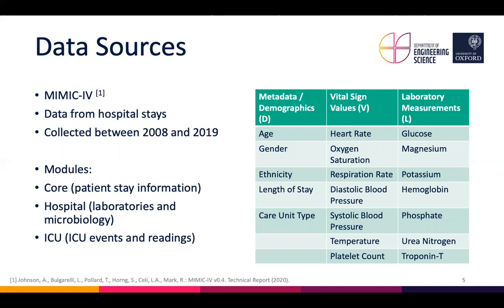The second database we're using is MIMIC-4, which contains data from hospital stays from the same medical center as MIMIC-CXR. Because MIMIC-CXR and MIMIC-4 share a common cohort of patients, and they use the same patient IDs across the two databases as well as consistent dates and times, we can use them together in this multi-modality study. Modules of MIMIC-4 that we were interested in were the core modules with information about patient stays, the hospital module which has laboratory information, and the ICU module which contains routinely measured ICU data.